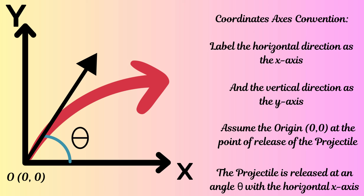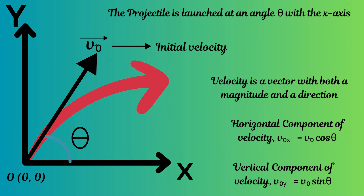We assume the object was released at an angle theta with the horizontal axis, the x-axis. If the initial velocity of the projectile is denoted by the vector v₀, then the horizontal component of the initial velocity is v₀ times cosine of theta, and the vertical component is v₀ times sine of theta.